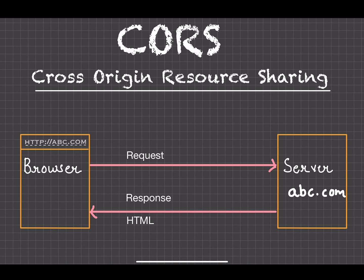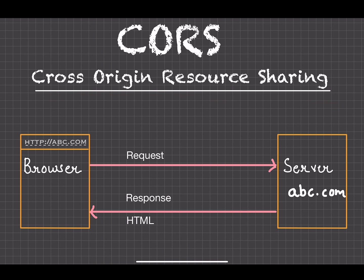Today we are going to discuss CORS — Cross Origin Resource Sharing. The default policy of the browser is same-origin policy. That means if you are requesting a resource from abc.com and the request comes from a different domain like xyz.com, both are two different domains, so by default the browser will block that.